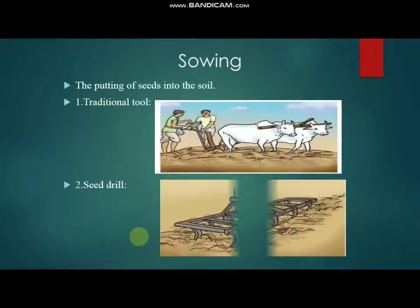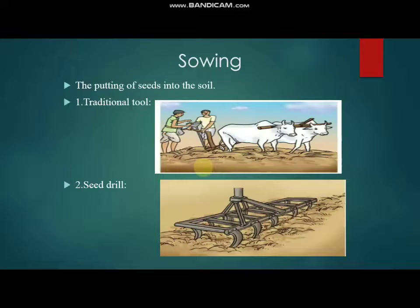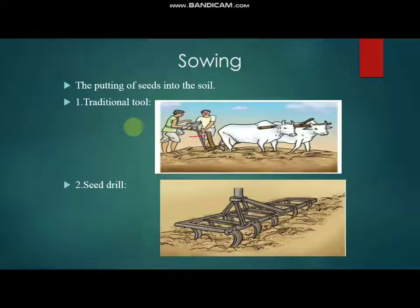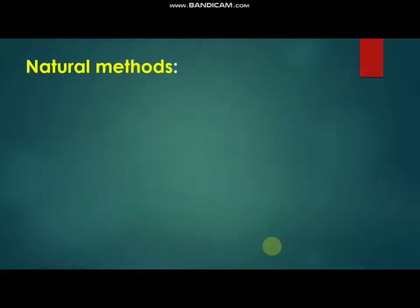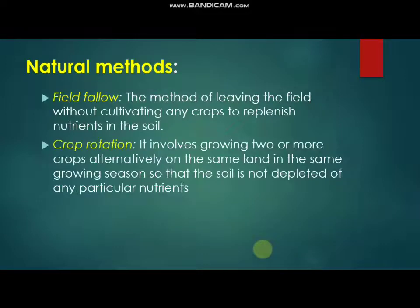Sowing is the putting of seeds into the soil. Traditionally, a funnel-shaped structure was used with the help of an ox for sowing, helping the farmer maintain a proper distance between seeds. In modern methods, a seed drill is used for sowing. The main benefit of the seed drill is that it keeps proper distance between the seeds, which helps in better growth of the plant.